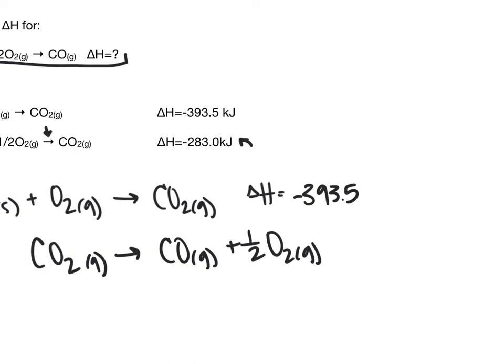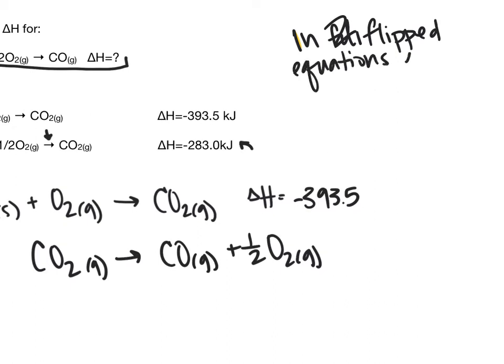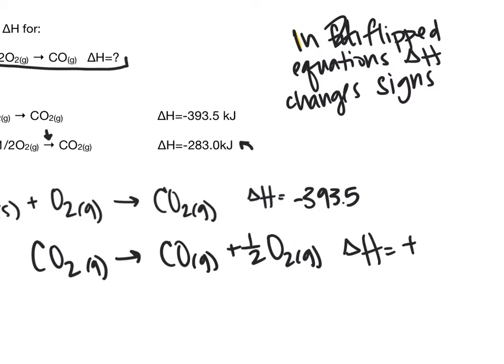When we flip equation two, we spin it around the arrow to get CO2 gas going to carbon monoxide gas plus half a mole of O2 gas. In flipped equations, delta-H changes sign. So the delta-H of this flipped reaction becomes positive 283.0 kilojoules.